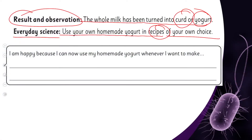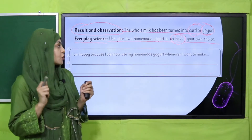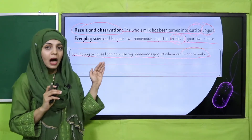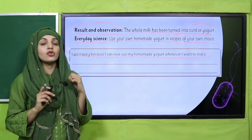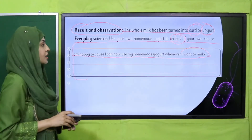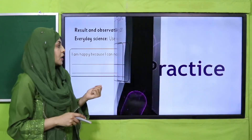My dear students, for homemade recipes — I make chicken kadai, biryani, dahi bhale — I use yogurt. Now I am happy because I can make my homemade yogurt whenever I want. Underneath the experiment, write down the dishes in which you use yogurt — dahi bhale, chicken kadai, biryani, or any of your favorite dishes. You can write their names in the box. You can perform this experiment in class or at home.